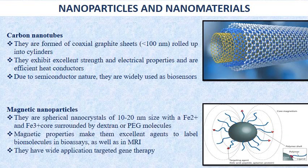The next nanoparticle is the magnetic nanoparticle — a class of nanoparticles that can be manipulated using magnetic fields. They commonly consist of a magnetic material such as iron, nickel, or cobalt, and a chemical component with functionality. They are spherical nanocrystals of 10 to 20 nanometers with a Fe²⁺ and Fe³⁺ core surrounded by dextran or PEG molecules. Their magnetic properties make them excellent agents to label biomolecules in bioassays and MRI, and they have applications in targeted gene therapy and detection of cancer and bacteria.